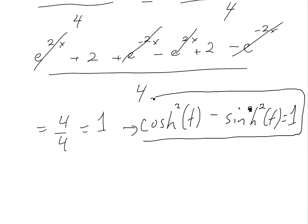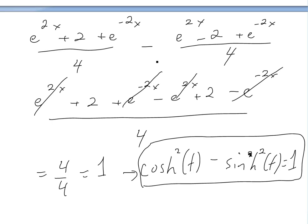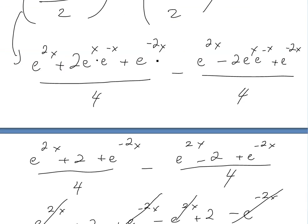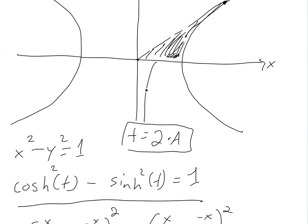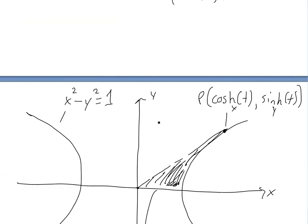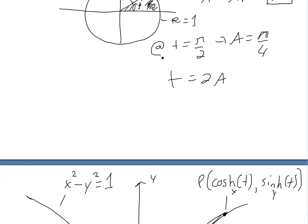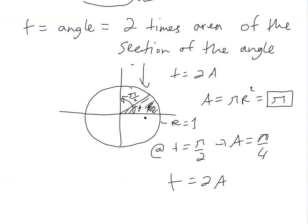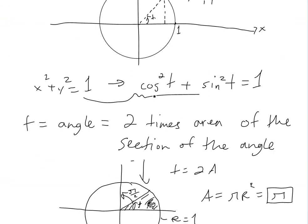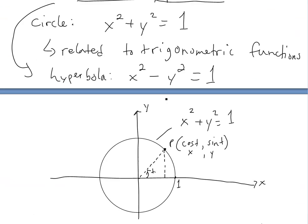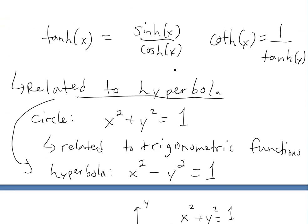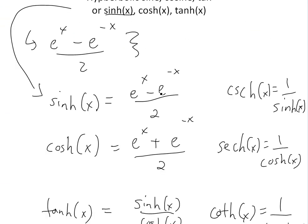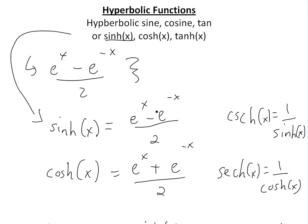So we've proved that cosh squared t minus sinh squared t equals 1. It's similar to the circle with trig - that's why hyperbolic functions are called hyperbolic, because they relate to the hyperbola in the same way that trig functions relate to the circle. That's also why trig functions are sometimes called circular functions. That's all for today - hopefully you learned something, and stay tuned for another Math Easy Solution.